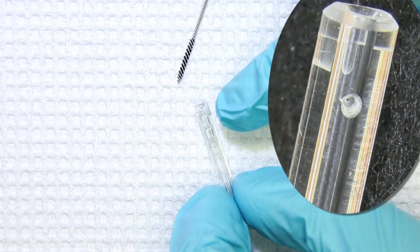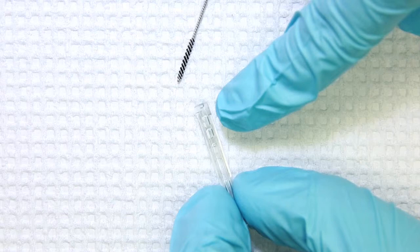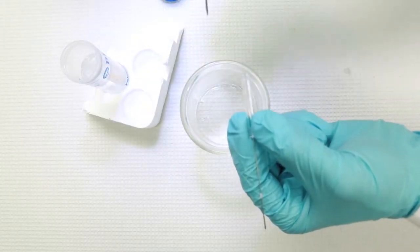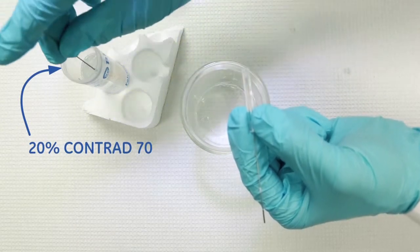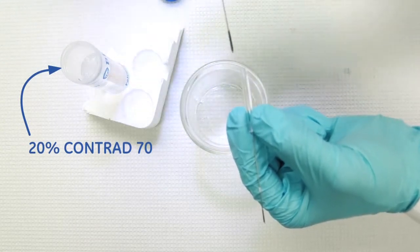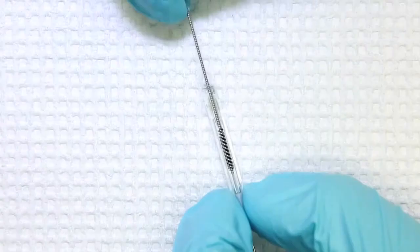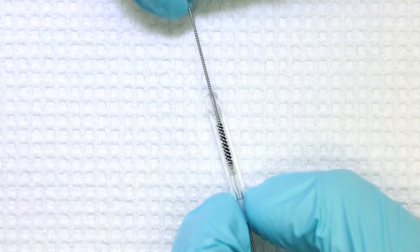It's also good practice to clean the uppermost portion of your syringe, which may not be adequately cleaned by the instrument itself. To do this, dip your syringe cleaning tool into a mixture of 20% Contrad and gently wash the inner part of your syringe glass.